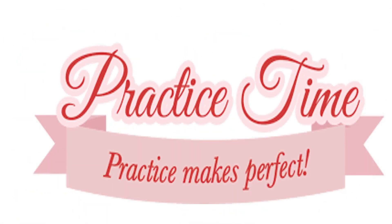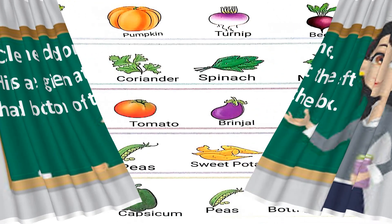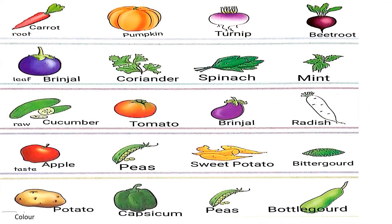Students, now it's time to attempt an activity through practice time. Let's see and try to understand. Circle the odd one out. Hints are given at the left-hand bottom of the box. Here you have different types of vegetables shown, but all the categories are different.